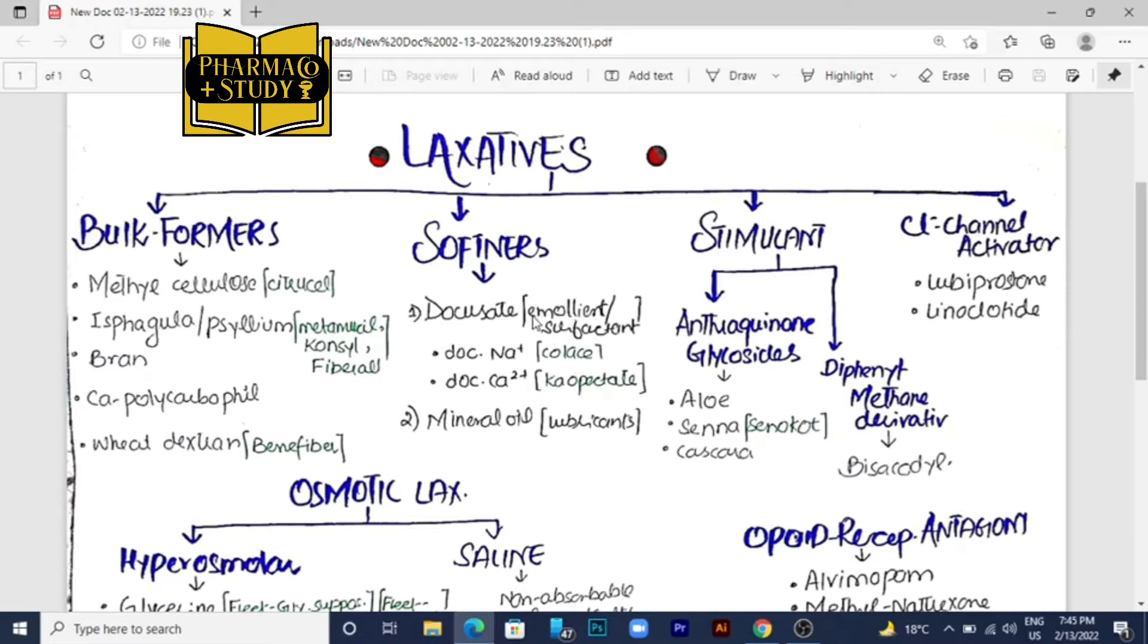First is docusate, which is known as an emollient or surfactant. There are two forms of docusate: docusate sodium and docusate calcium. Docusate sodium comes under the name colace and docusate calcium comes under the name cowpectate.